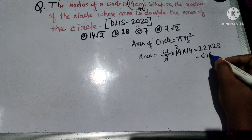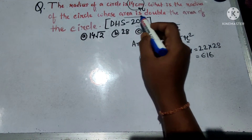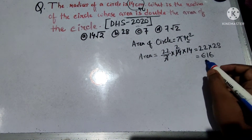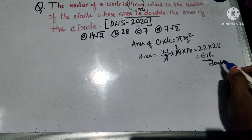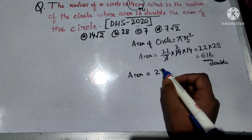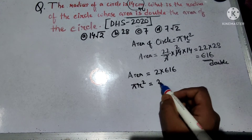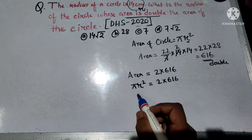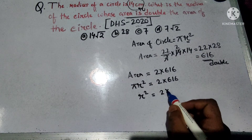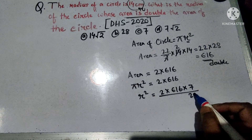The result is 616. The area of the circle using πr squared gives us 616. I am putting the area as πr squared.